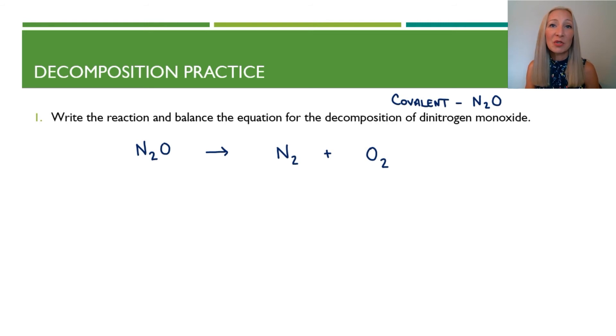The last thing we are going to do is balance this equation. We're going to put a two in front of the N2O, a two in front of the nitrogen, and a one in front of the oxygen. That way, on both sides, we have four nitrogen atoms, and on both sides, we have two oxygen atoms.